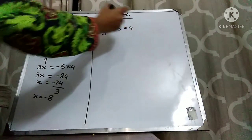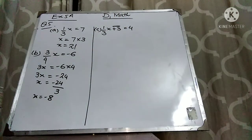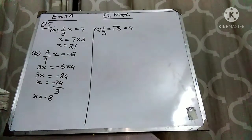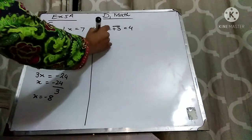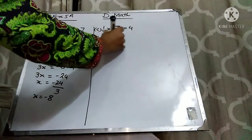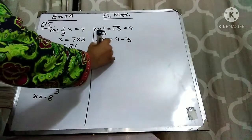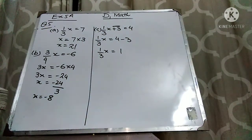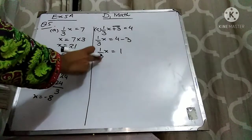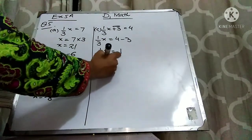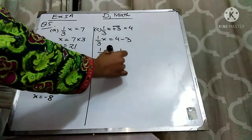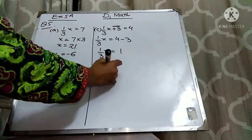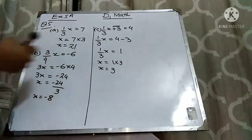In this question, 3 is adding over here, so move it to the right-hand side. It is adding over here, and if it goes to that side it will subtract. So 4 minus 3 gives 1. Now this 3 is dividing over here; if it goes to that side it will multiply by 1. So x = 3. This is your answer.